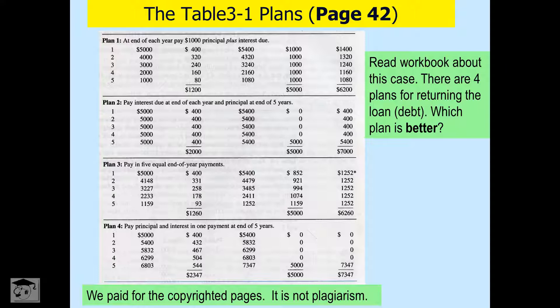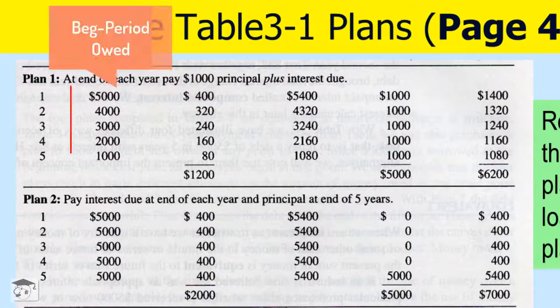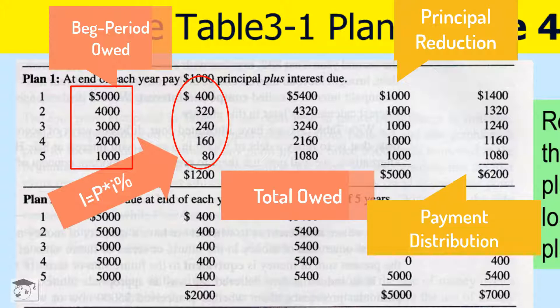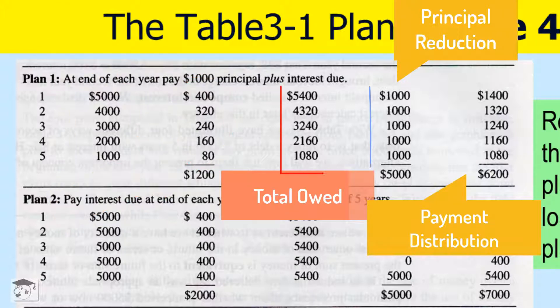Let's assume you are borrowing $5,000 from a bank for 5 years, and the interest rate is 8% per year. There are four ways of paying back this loan. The first one is to pay back only interest plus $1,000 at the end of each year, and return the principal of $5,000 at the end.